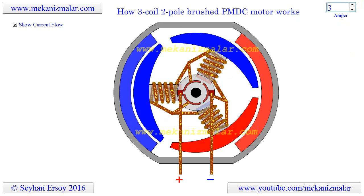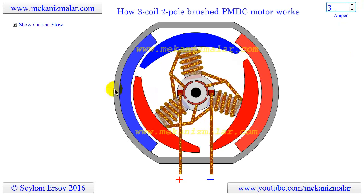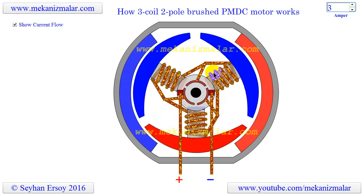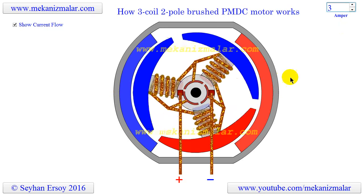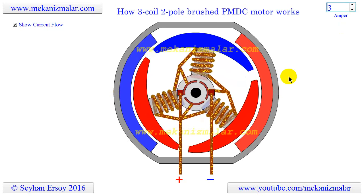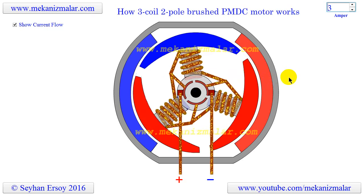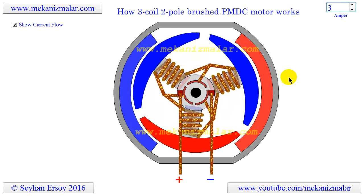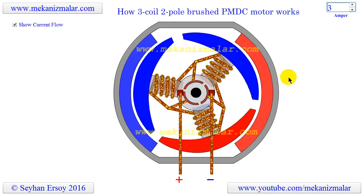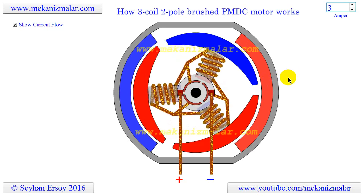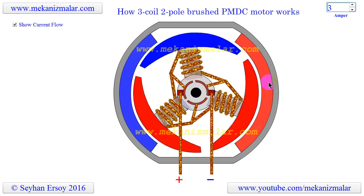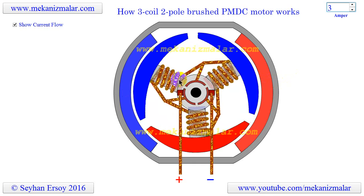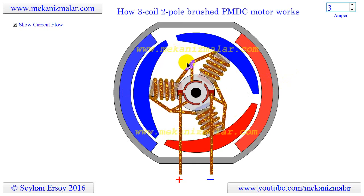One magnet is located on the stator and one magnet is on the rotor. If those magnets are not lined up, the rotor will turn until they are lined up. Once the magnets are lined up, the rotation stops. To sustain rotation, and because the permanent magnet cannot be reoriented, the electromagnets must be activated or deactivated.